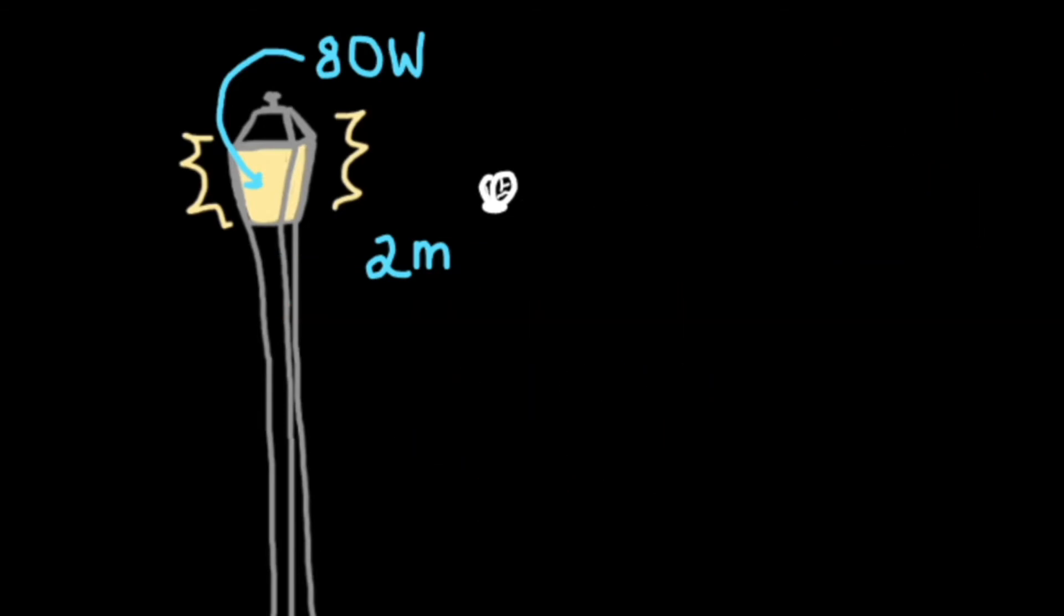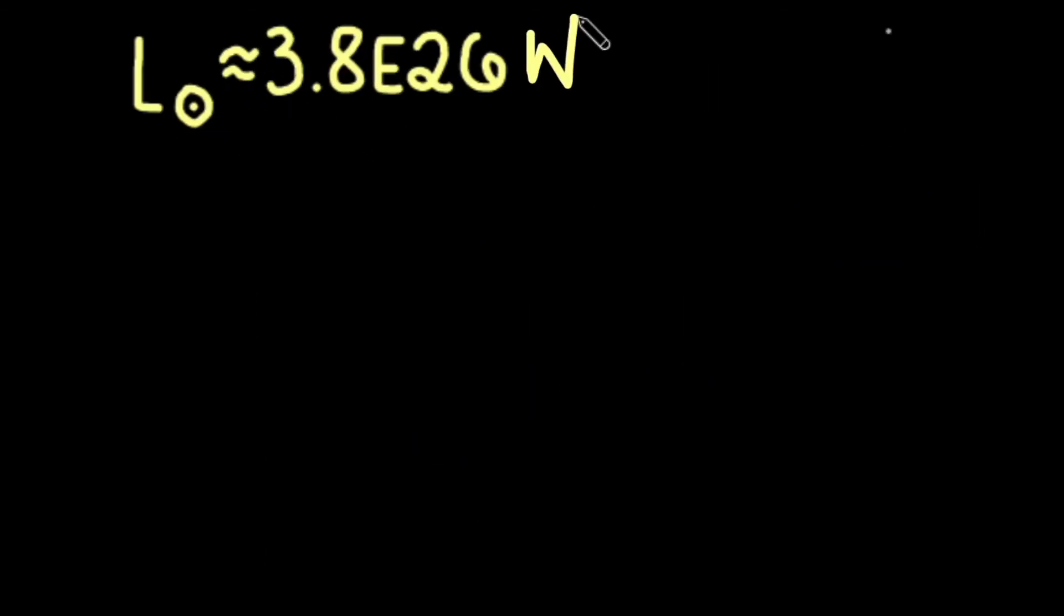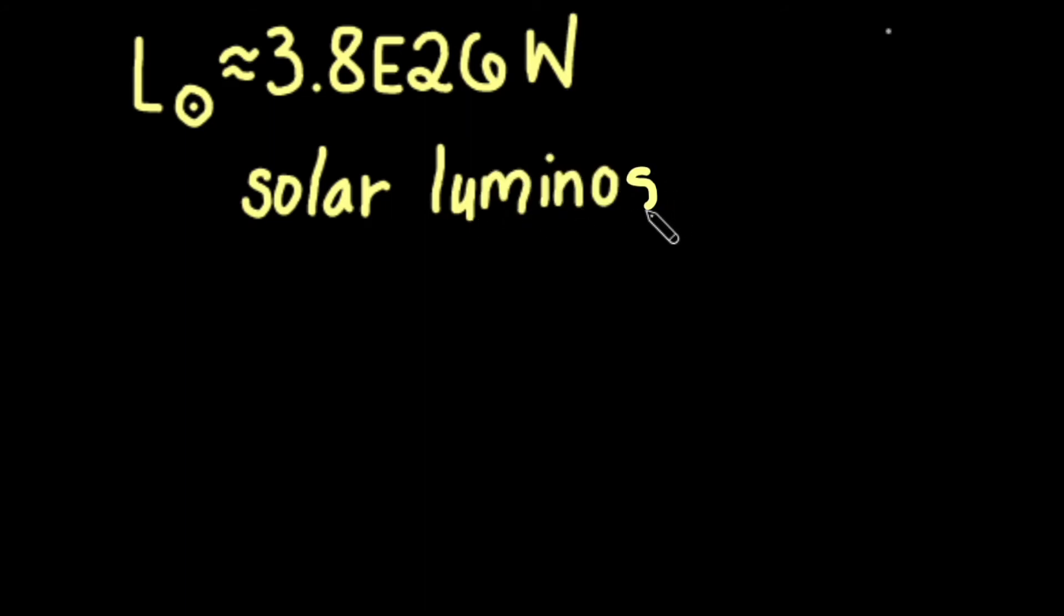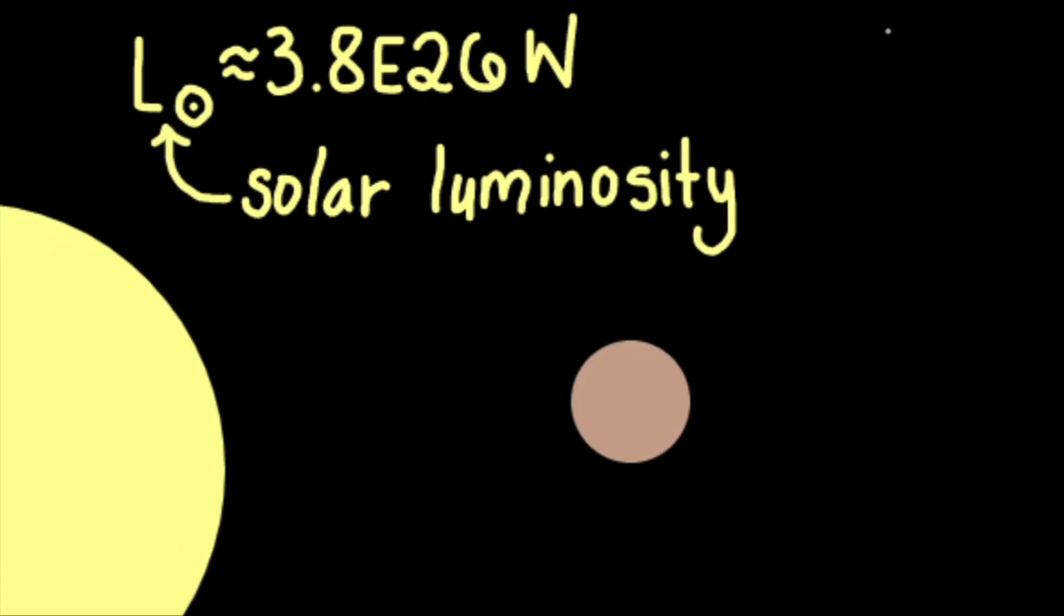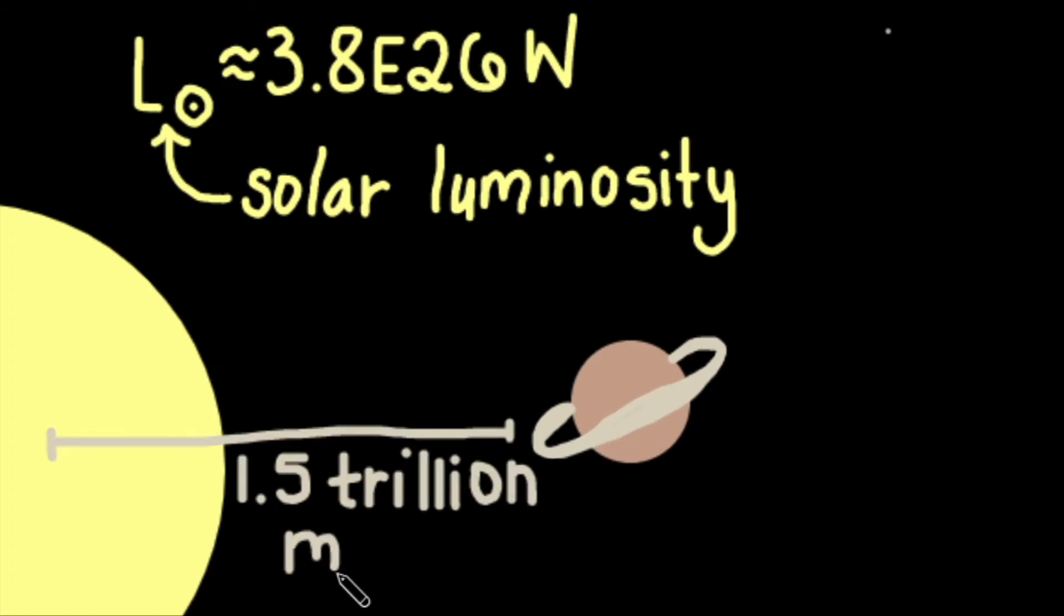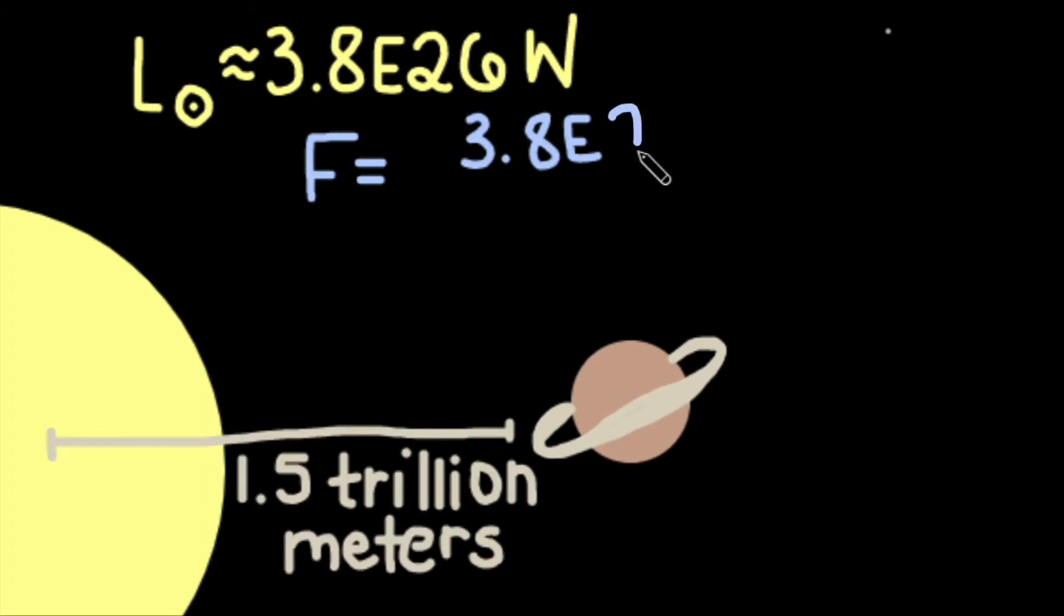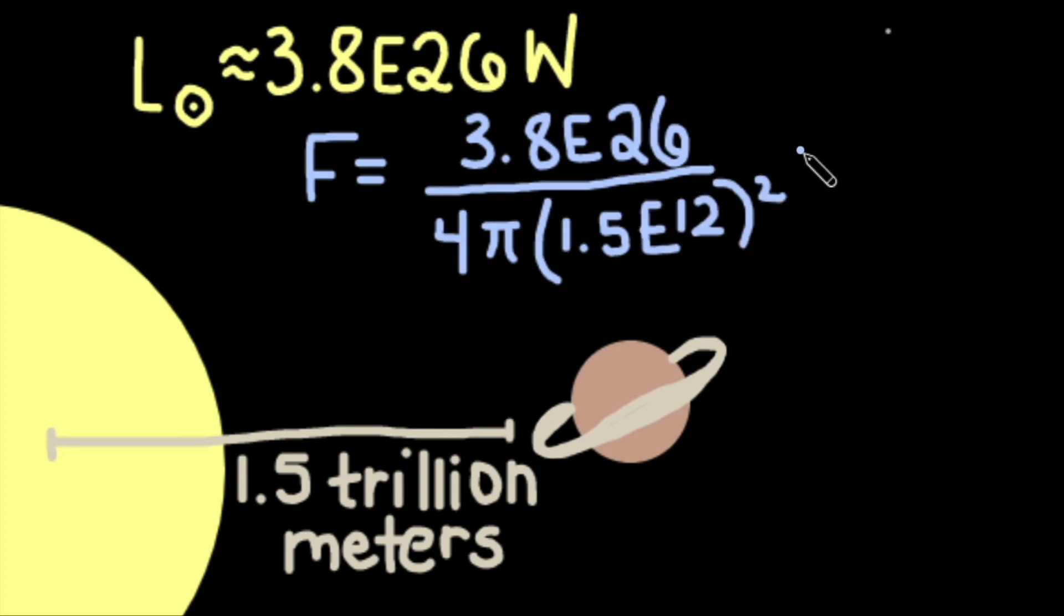With a luminosity of 3.8 times 10 to 26 watts, the Sun is a much more powerful source. If Saturn is about 1.5 trillion meters from the Sun, what solar flux do we experience? Well, if we plug in all the appropriate numbers, we get approximately 13.4 watts per meter squared.